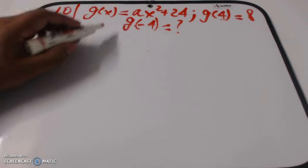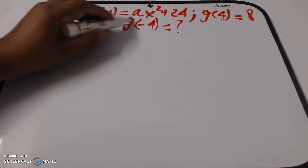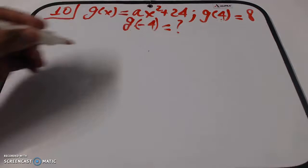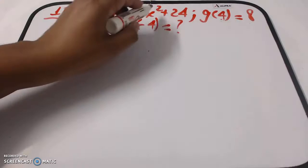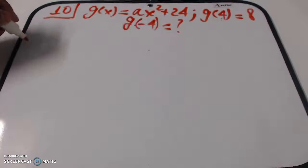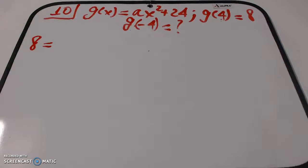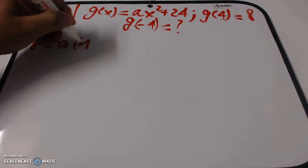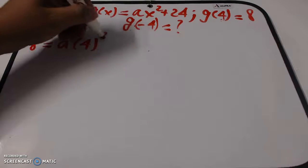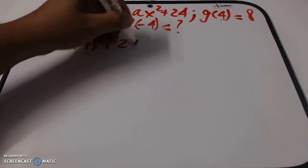So the first step is finding this fixed value, letter a. To do that, we're going to plug in x equals 4 into the function, and replace g(x) with 8. So it looks like this: 8 = a(4)² + 24.